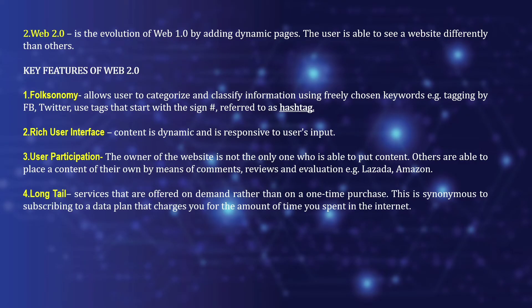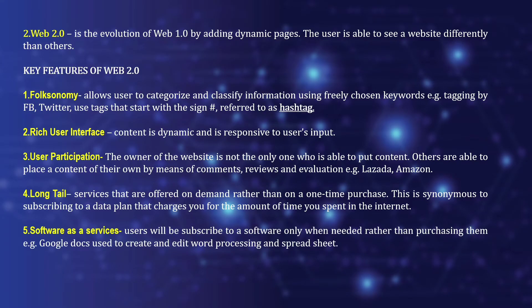Next we have long tail — services that are offered on demand rather than as a one-time purchase. This is similar to subscribing to a data plan that charges you for the time you spend on the internet. Examples of long tail services are Netflix, Disney Plus, VPN, and Bilibili. Lastly, software as a service means users subscribe to software only when needed rather than purchasing it — for example, Google Docs, used to create word processing documents and spreadsheets.